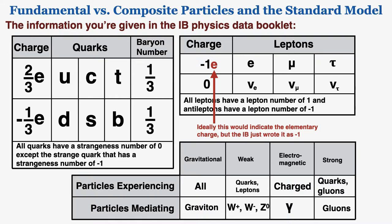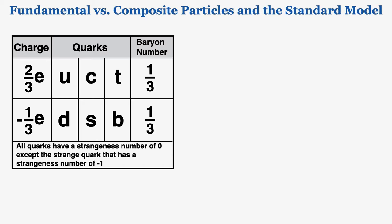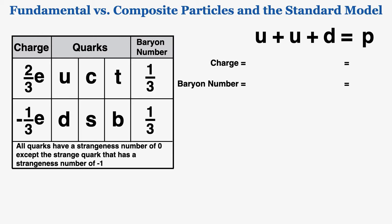This information won't need to be memorized specifically. From the table: up, charmed, and top quarks have a charge of +2/3e, while down, strange, and bottom quarks have a charge of −1/3e. For a proton (up, up, down): the charge is 2/3 + 2/3 − 1/3 = +1e. The baryon number is 1/3 + 1/3 + 1/3 = 1, which is the baryon number of any baryon. For a neutron (up, down, down): the charge is 0 and the baryon number is 1.